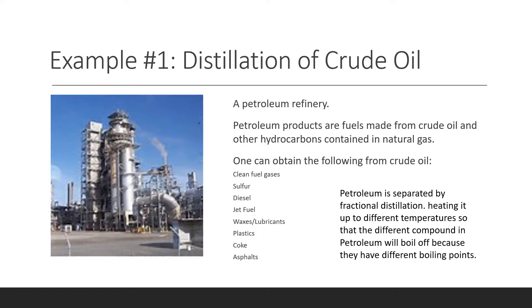So the different products have a range of uses, including propane for grilling, gasoline and diesel for cars, and asphalt for roads.